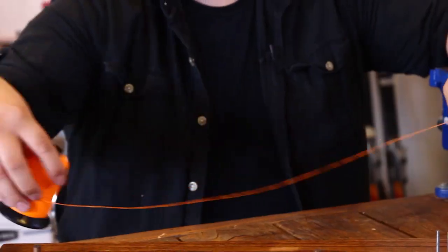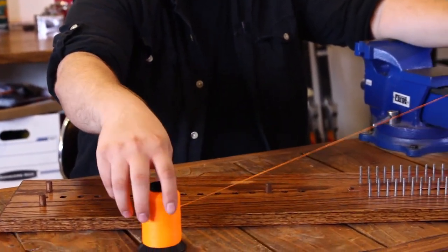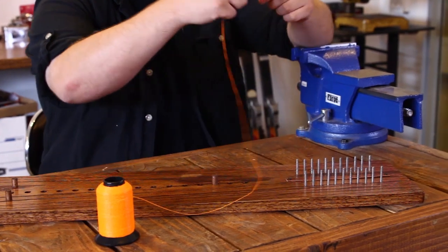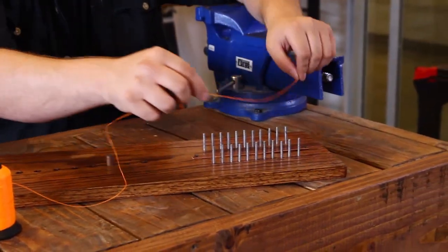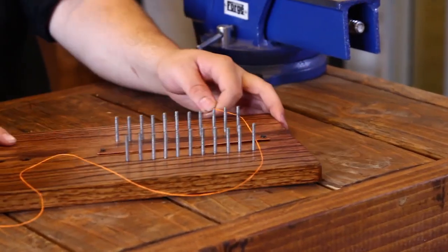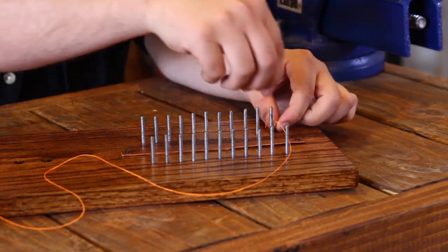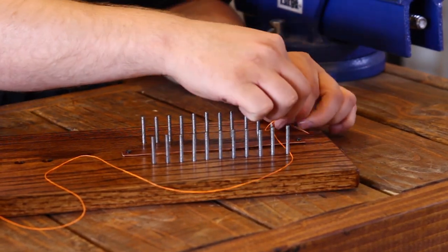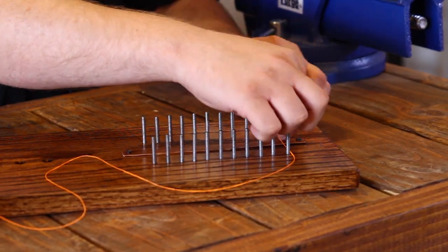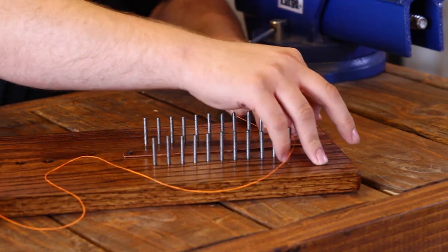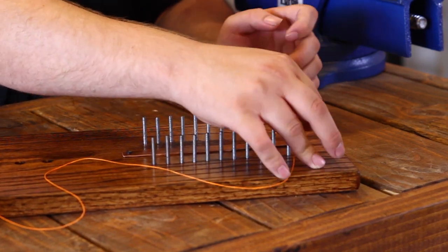What I'm going to do is unspool a little bit of the string and start here down on my nails. And I'm going to come to my first nail and tie it off. Doesn't need to be a crazy knot, just one that holds it in place while you pull.